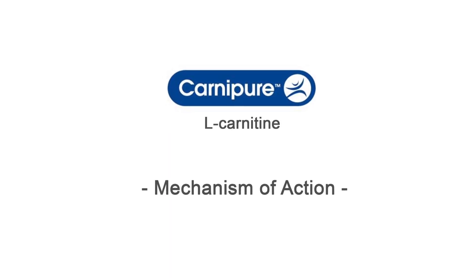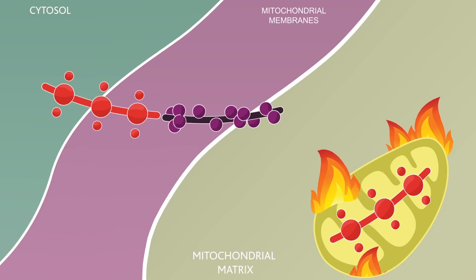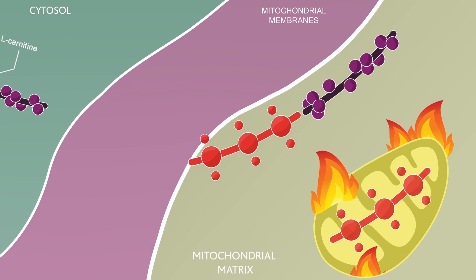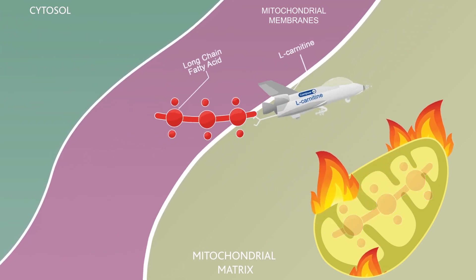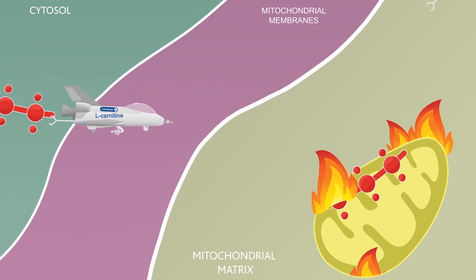Learn more about Carnipur L-Carnitine and its mechanism of action. L-Carnitine is part of a shuttle mechanism that transports long-chain fatty acids across the mitochondrial membrane to be broken down through beta-oxidation.